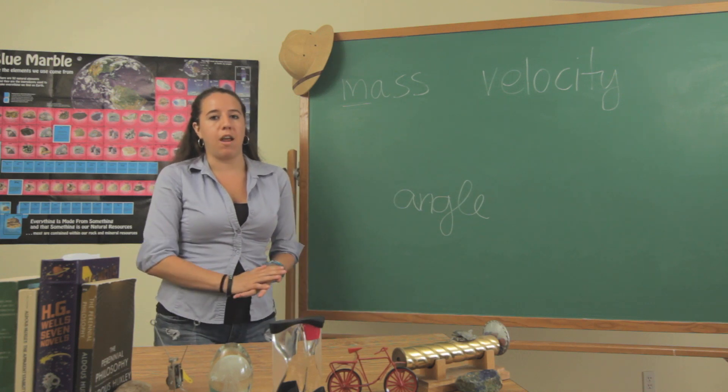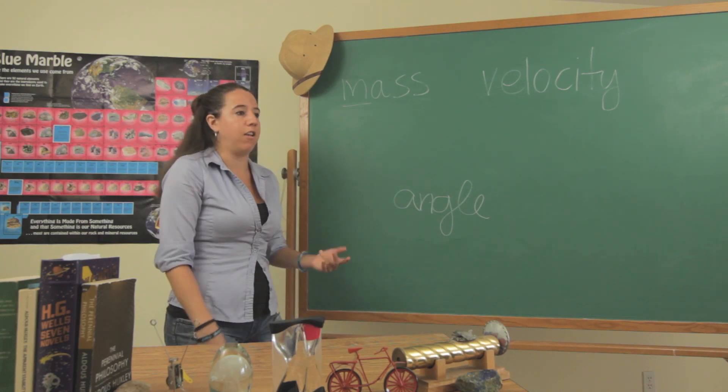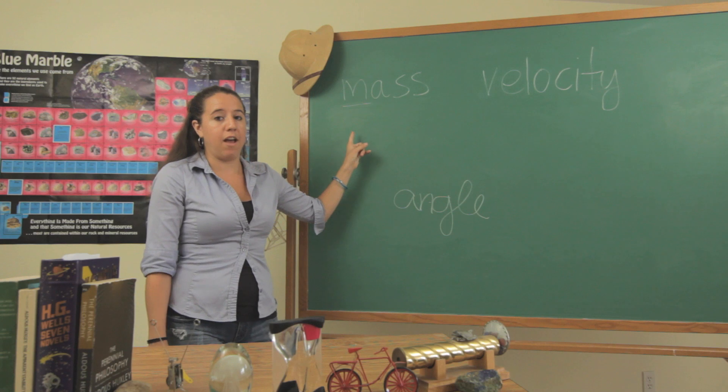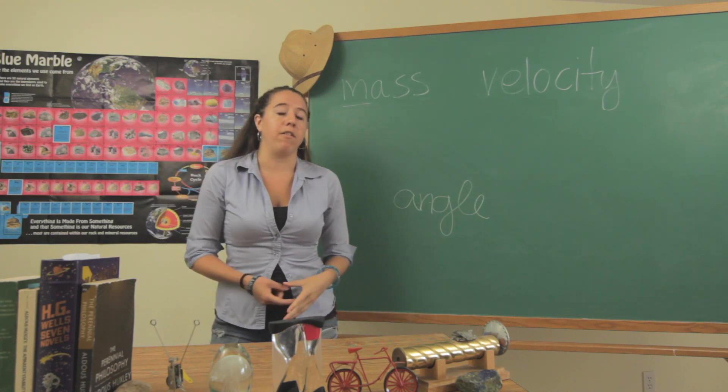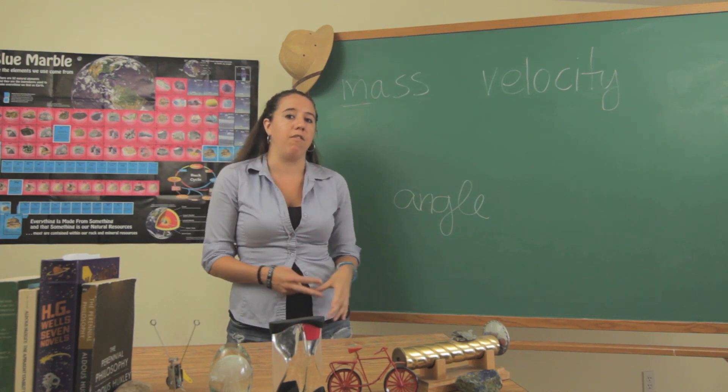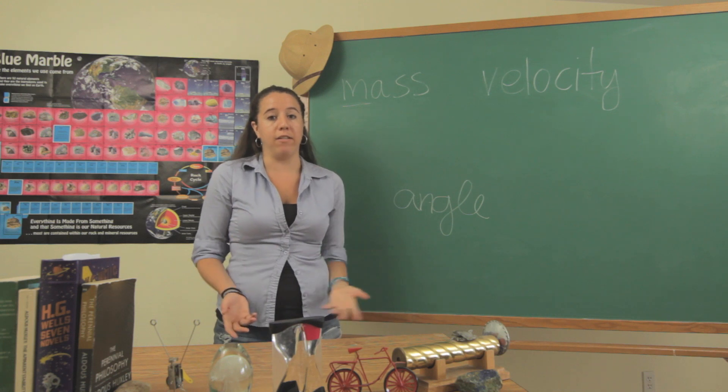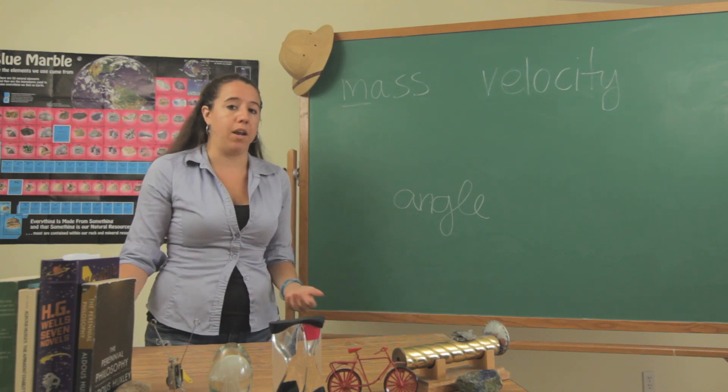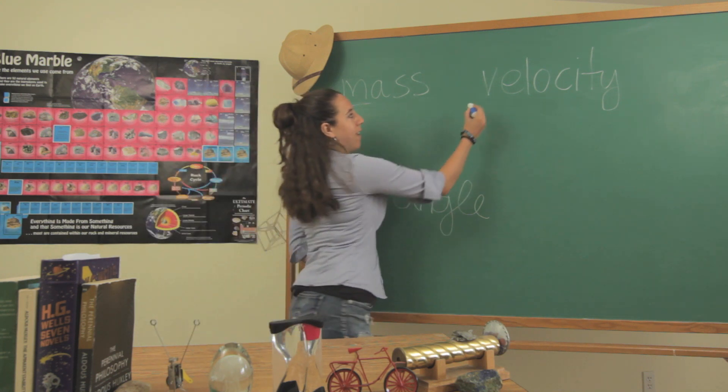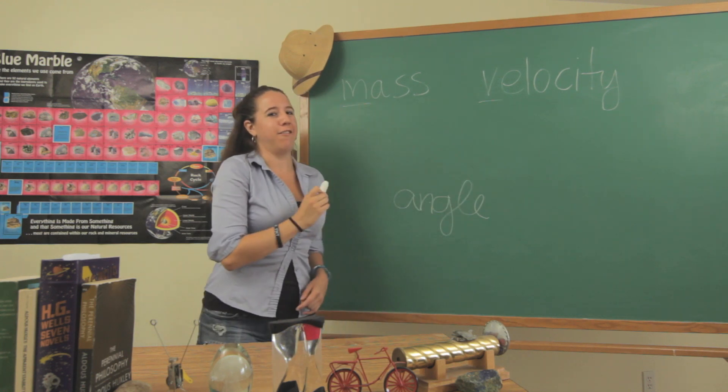So let's assume that you're given the diameter, you find the chemical composition, and you get the mass out of that. Then you're ready to move on to the second attribute, which is the velocity, or how fast the meteorite is actually going when it hits the earth. V for velocity.